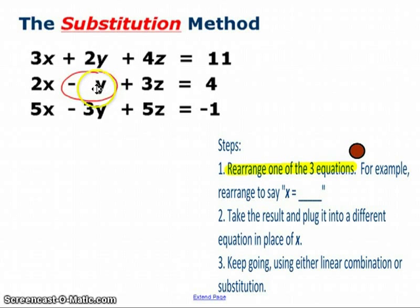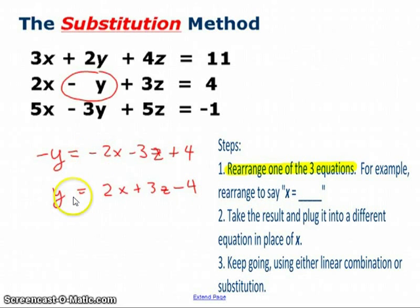Rearrange the middle one so that you get it as a y equals equation. Hit the pause button. When you come back, I'll show you how I did that. Okay, I'm going to assume that you did that. And here's what I got. I ended up with y equals 2x plus 3z minus 4.